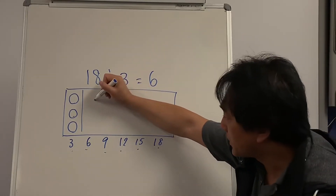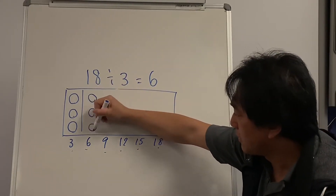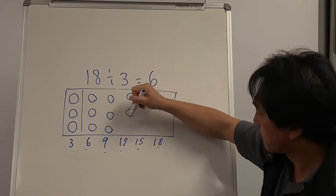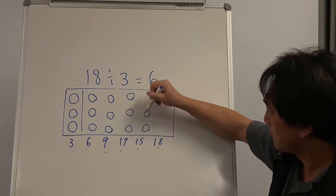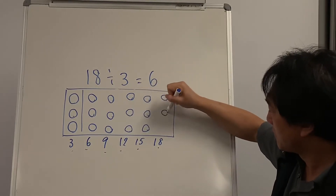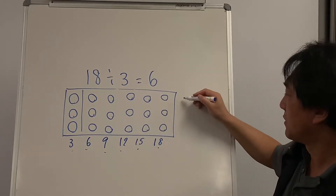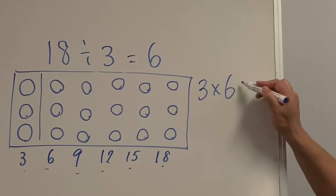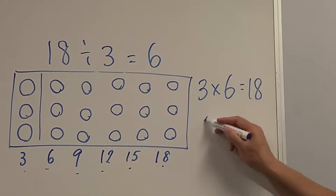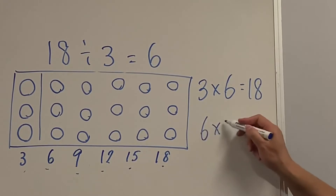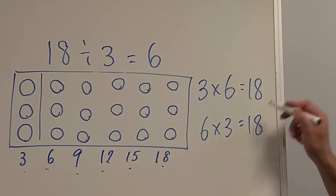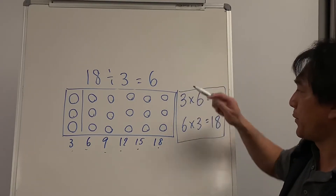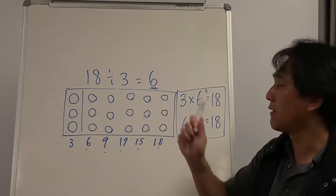Now, if I draw the picture — I'm sure you did draw this picture — I can think of 2 number sentences. So clearly, these number sentences help me to understand the division.